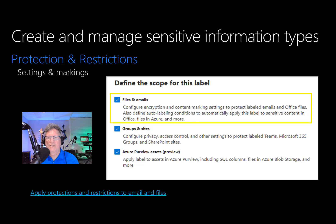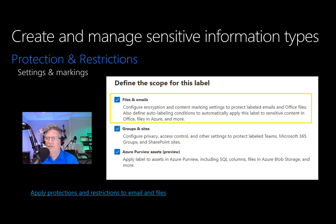Users can apply just one label at a time for each document or email. When you label an email message that has attachments, the attachments don't inherit the label — with one exception: if the attachment is an Office document with a label that doesn't apply encryption and the label you apply to the email applies encryption, the emailed Office document inherits the email's label with its encryption settings. Otherwise, if the attachments have a label they keep their originally applied label. If the attachments are encrypted without a label, the encryption remains but they aren't labeled. If the attachments don't have a label, they remain unlabeled.